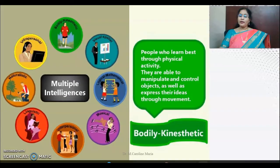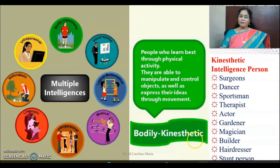Bodily-kinesthetic intelligent people are best known for their physical activity. They are able to manipulate and control objects as well as express their ideas through movements. Examples include surgeons, dancers, sportsmen, therapists, actors, gardeners, magicians, builders, hairdressers, and stunt persons. All these people are bodily-kinesthetic intelligent people.